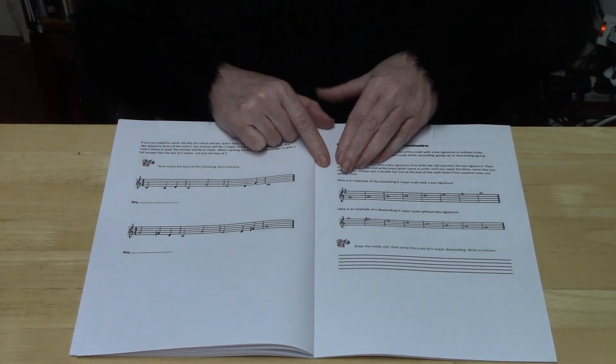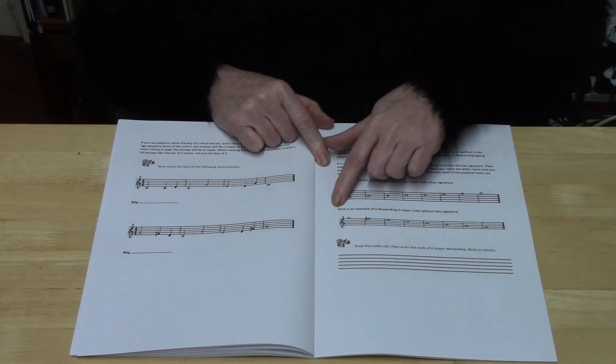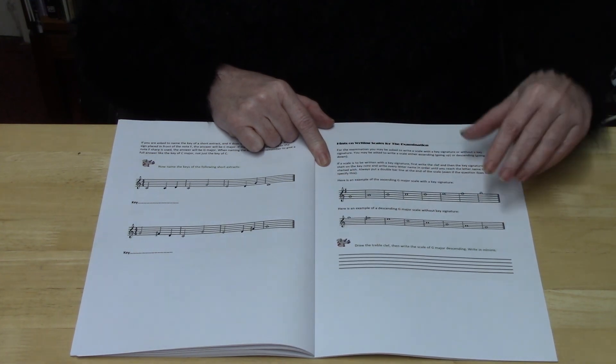And so here you've got an example of the ascending G major scale and then you've got an example of the descending G major scale.